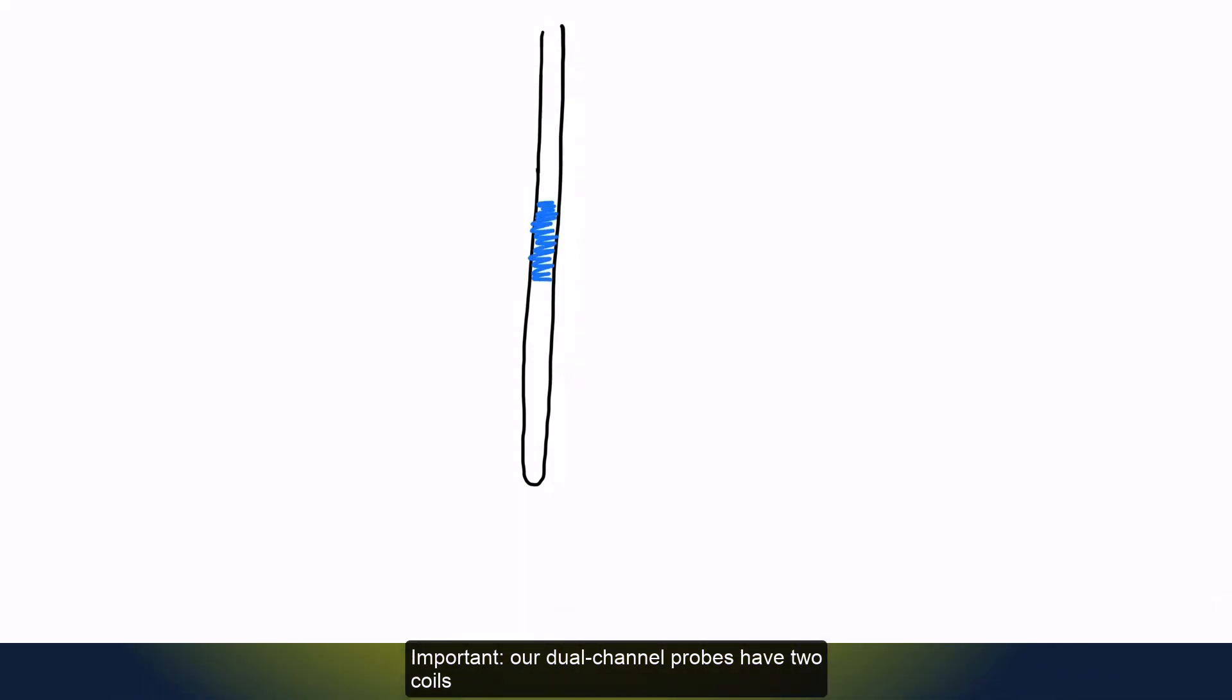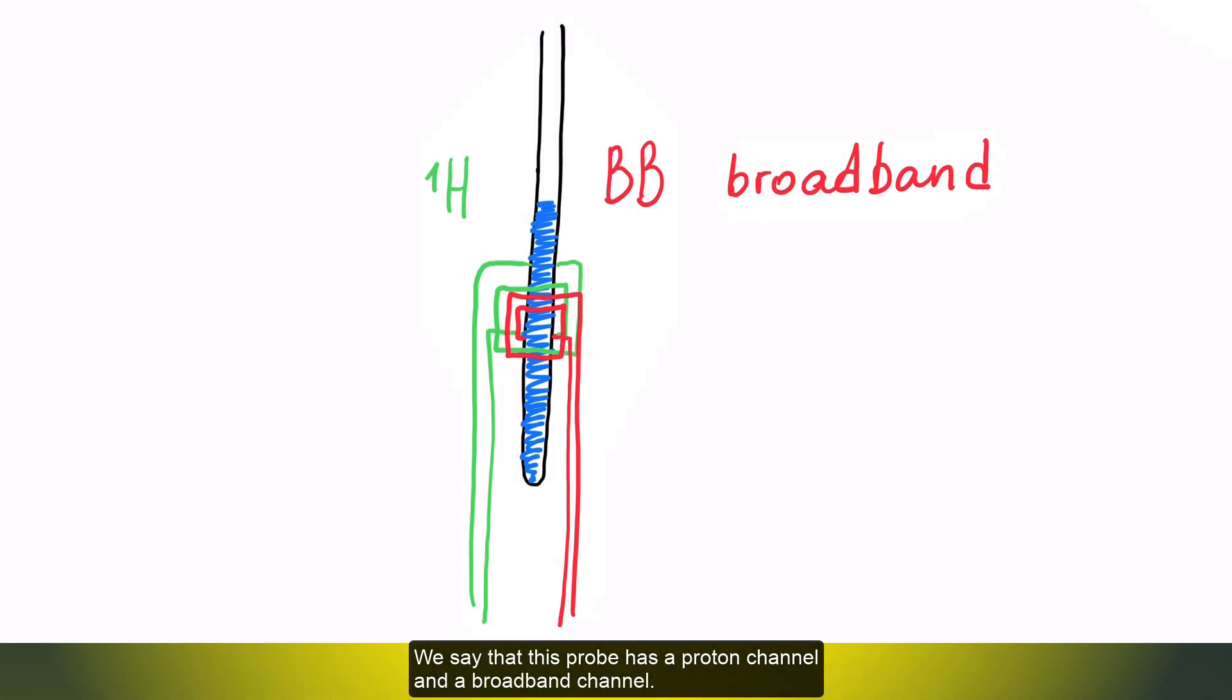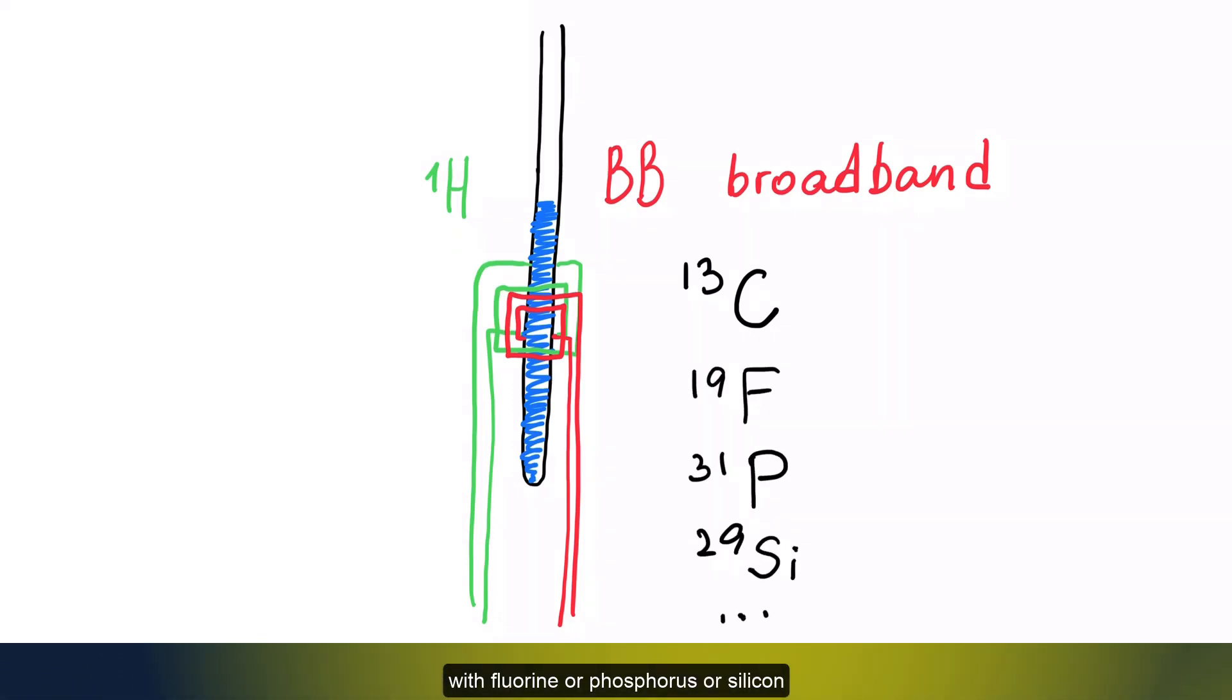Important. Our dual channel probes have two coils. One for the proton, and another one for all other nuclei. We say that this probe has a proton channel and a broadband channel. The consequence of this design is that the coil of the broadband channel may only be tuned to one heteronucleus at a time. For example, if I tuned just now to Proton and Carbon, I will be able to record Proton and Carbon experiment. However, if I now need to record the next experiment with Fluorine or Phosphorus or Silicon, I must tune the probe again.